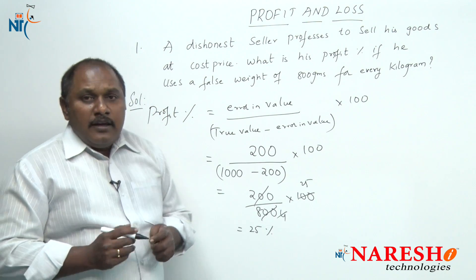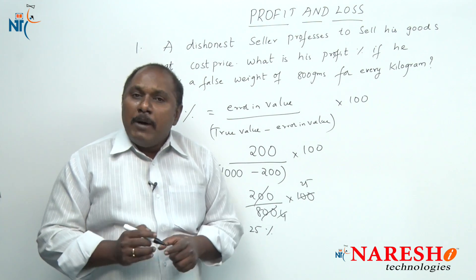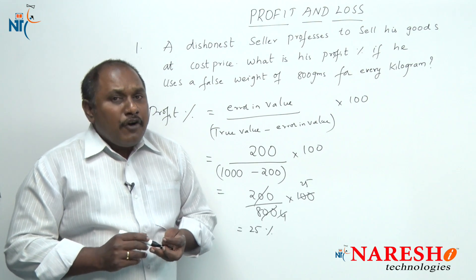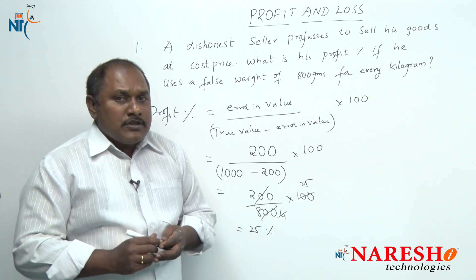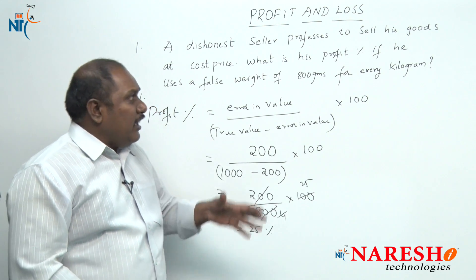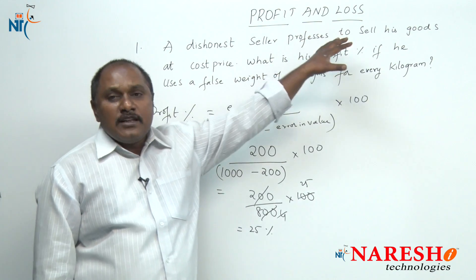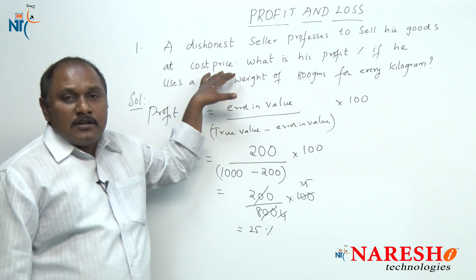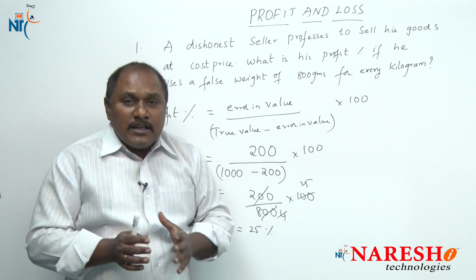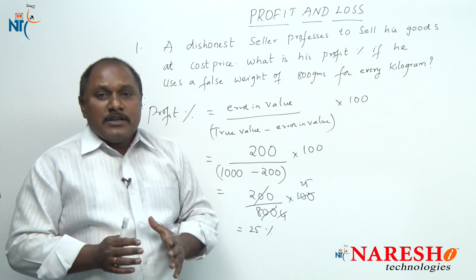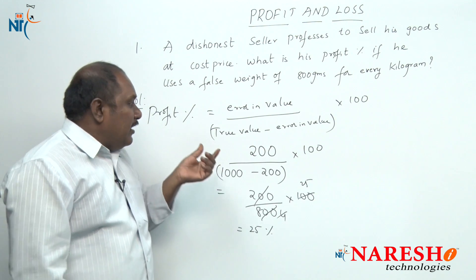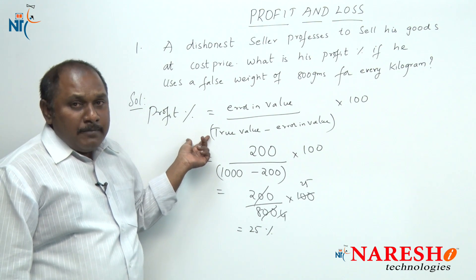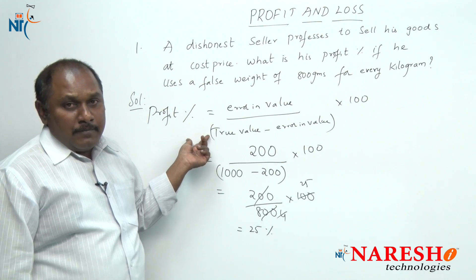However, there is a drawback in using this formula. This formula can be used only if the shopkeeper professes to sell his goods at cost price. If the shopkeeper does not sell his goods at cost price, then this formula will not help to solve the problem.